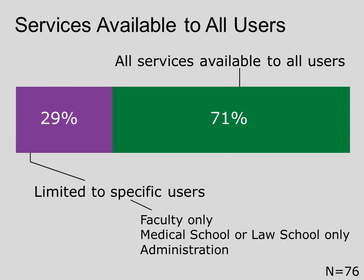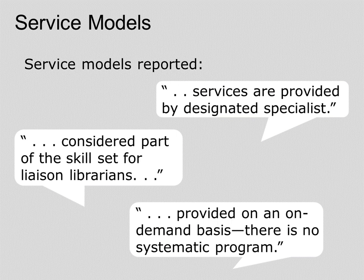We wanted to know if these services were limited to specific user groups. We found that the majority of libraries — 71 percent — provide the services to all their users. However, some libraries do limit services to specific groups, for example, limiting services only to faculty members or administrators. Comments from respondents also reflected the different service models that exist or are being developed in libraries today. Services may be provided by designated specialists, primarily handled by liaison librarians, or provided on an ad hoc basis with no systematic programs.